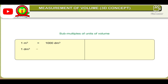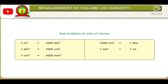Submultiples of units of volume: 1 cubic meter is equal to 1000 cubic decimeters. 1 cubic decimeter is equal to 1000 cubic centimeters. 1 cubic centimeter is equal to 1000 cubic millimeters. 1000 cubic centimeters is equal to 1 liter. 1 cubic centimeter is equal to 1 milliliter. 1 cubic meter is equal to 1000 liters.